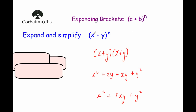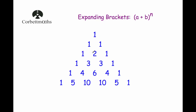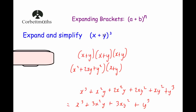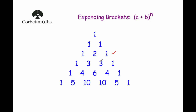Looking at our first question x plus y squared, the coefficients are 1, 2, and 1 — and in Pascal's triangle we have exactly 1, 2, 1 in that row. For x plus y to the power of 3, the coefficients are 1, 3, 3, 1 and the next row of Pascal's triangle is 1, 3, 3, 1. So Pascal's triangle gives us the numbers in front of each term.